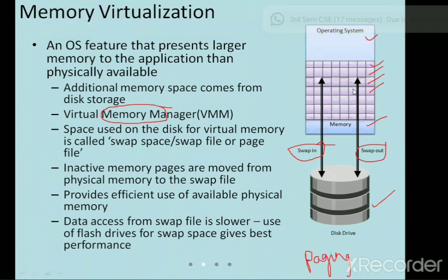We take the help of memory to have faster operations. This paging transfers files quickly so you feel it is not taking much time — it has been transferred to the disk drive. The operating system takes the help of the memory manager to transfer pages from memory to the disk drive. Access from disk drive is slow, whereas flash drives, USBs, and cache memories are fast. So to make operations faster we use memory virtualization.